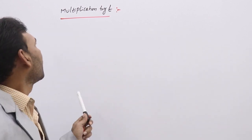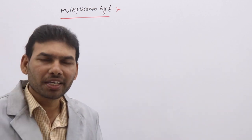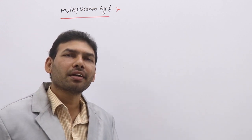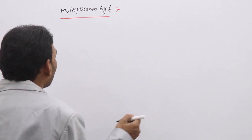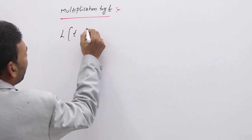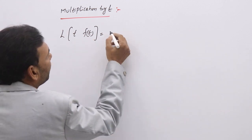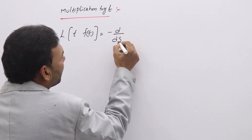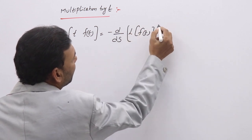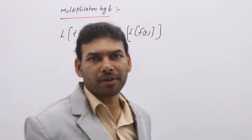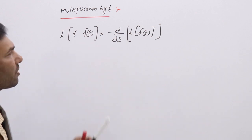Multiplication by t. When t is multiplied with some other function — like e^(at), sin(at), or cos(at) — we apply the following principle: L{t·f(t)} = -d/ds [L{f(t)}]. That means you have to differentiate the Laplace transform of f(t) with respect to s when t is in product.